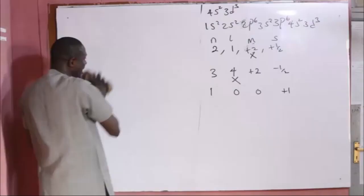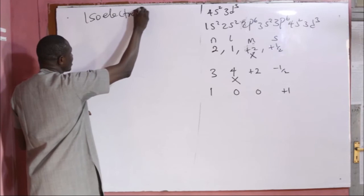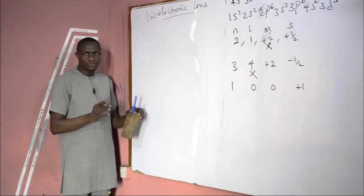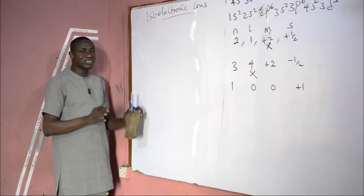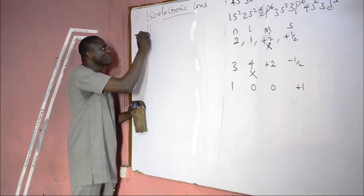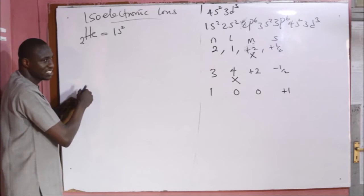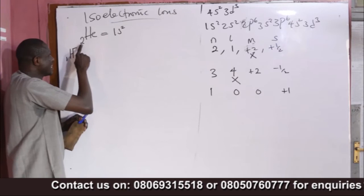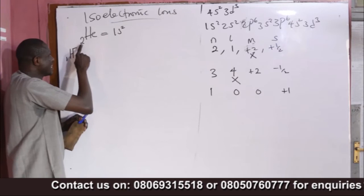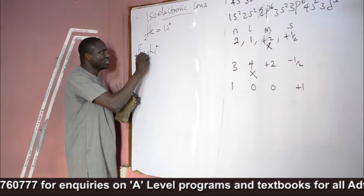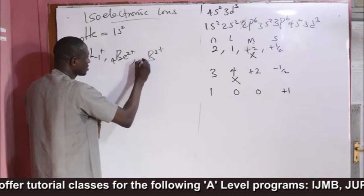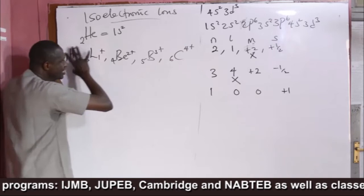There is the concept of isoelectronic ions. Isoelectronic ions are ions of different atoms having the same number of electrons and the same electronic configuration. Those ions usually have the electronic configuration of the nearest noble gas to them. For instance, the isoelectronic ions to helium (atomic number 2, configuration 1s2) include: the hydride ion H⁻ (1 + 1 = 2 electrons), Li⁺ (3 − 1 = 2), Be²⁺, B³⁺, and C⁴⁺ (6 − 4 = 2).